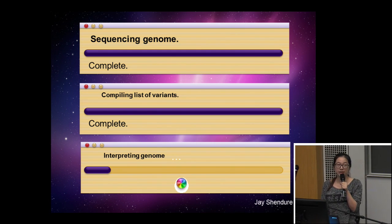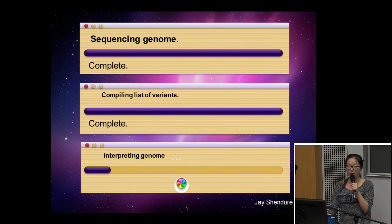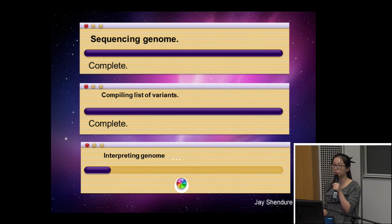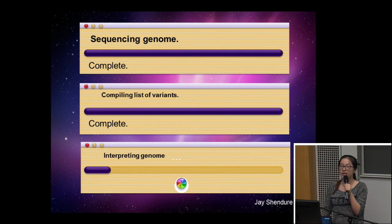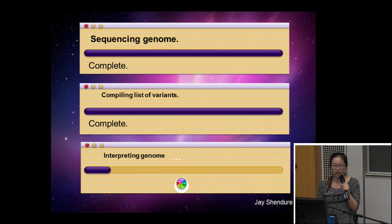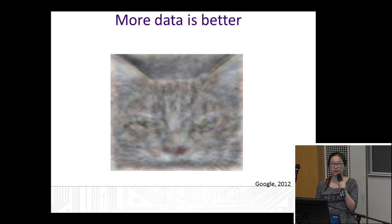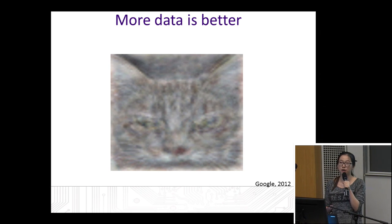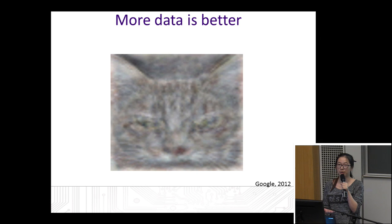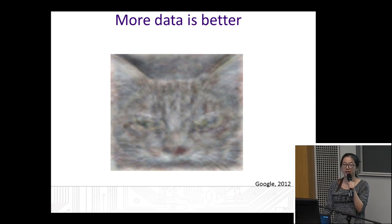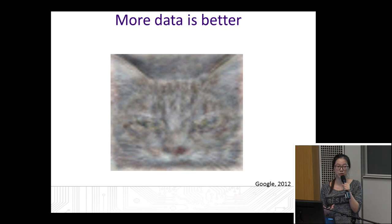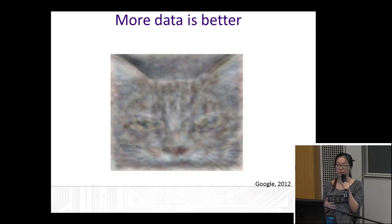We want to develop a massively parallel approach for understanding the genome. Our approach combines synthetic biology, DNA sequencing, and machine learning, resulting in predictive models about how changes in DNA affect protein production. To build such models, we need a lot of data. For example, in 2012, Google let a computer see millions of pictures from YouTube videos, and it discovered what a cat looked like by itself through learning from tons of data. In our case, there are only 20,000 genes in the human genome — far too small for training, which requires millions of data points.